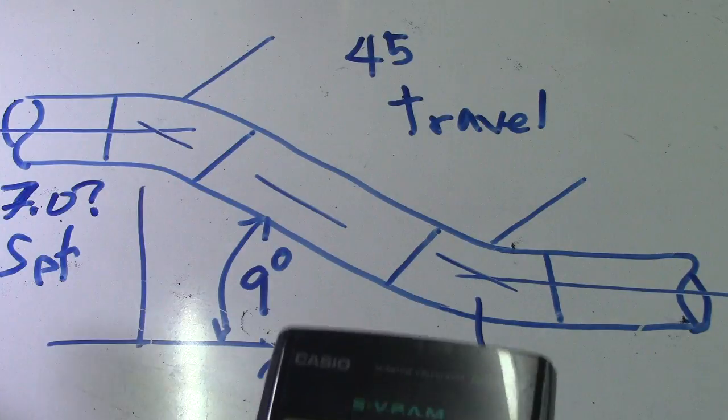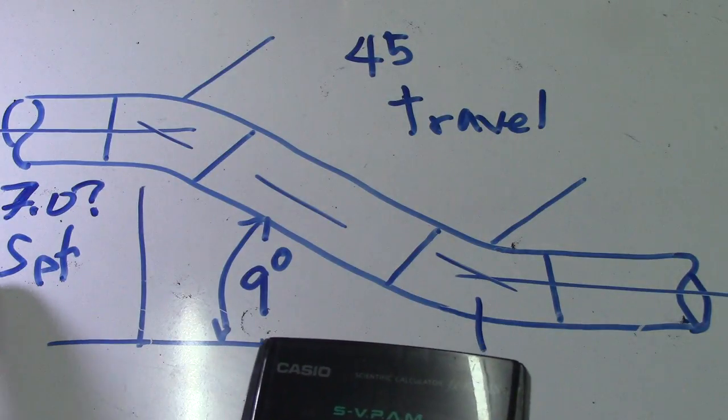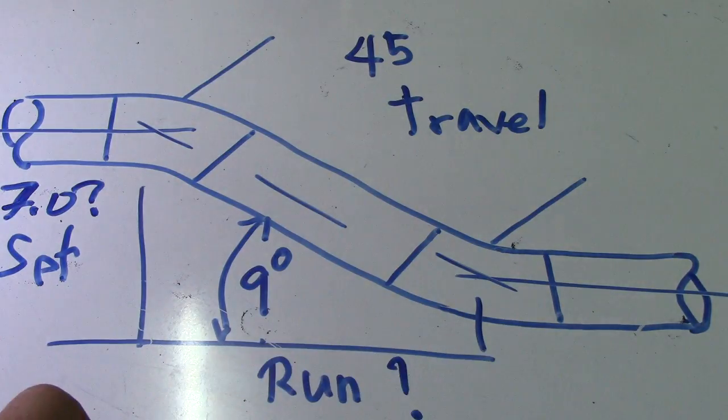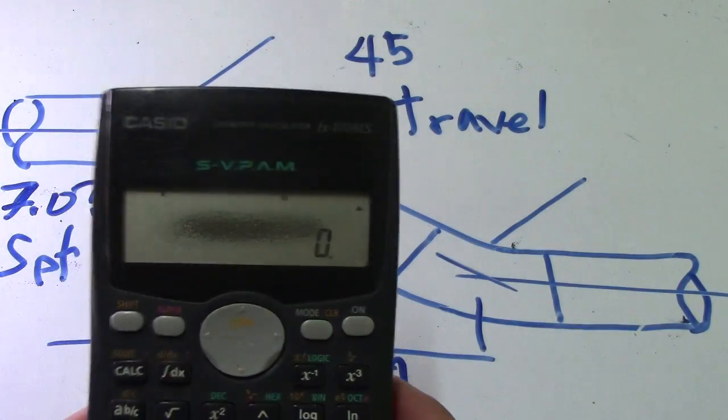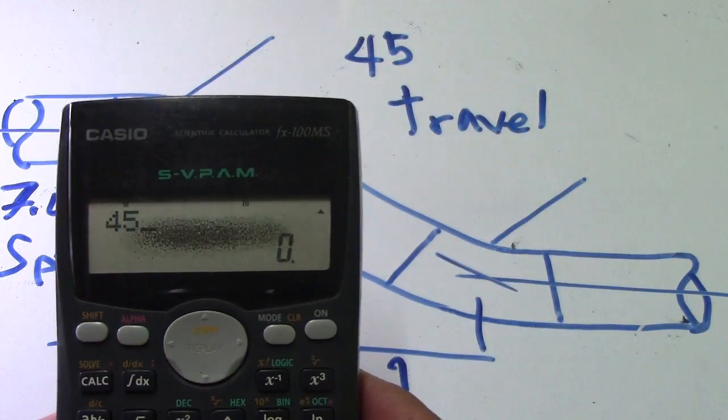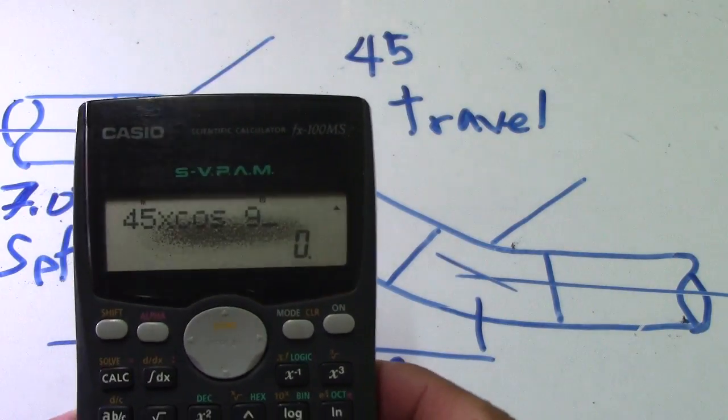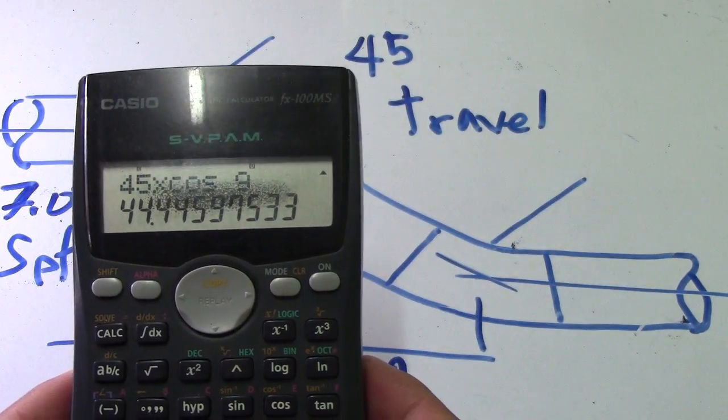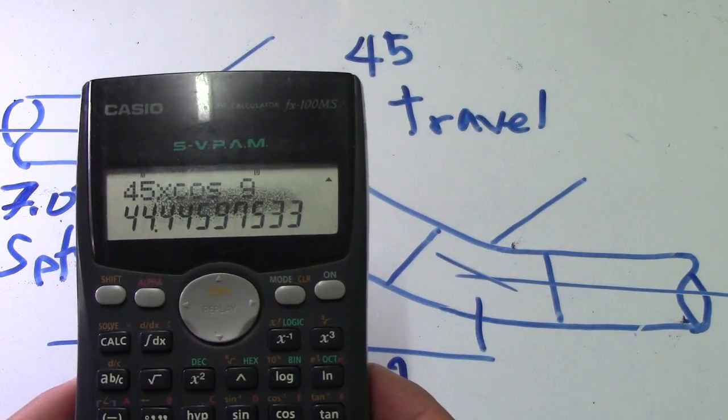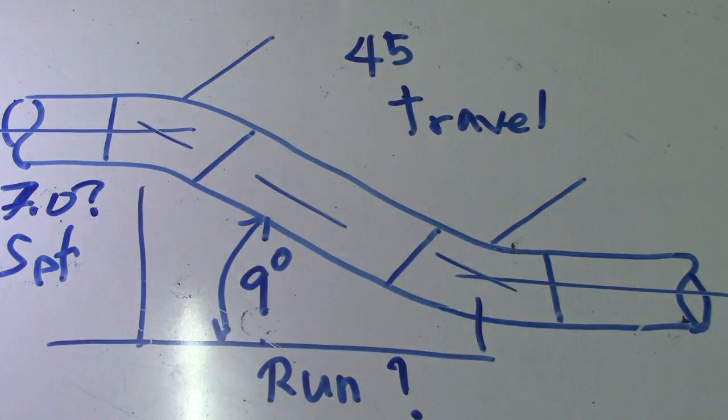If set is the question, use sine; if run is the question, use cosine. So 45 multiplied by cosine 9 degrees - that is the answer: 44.4.